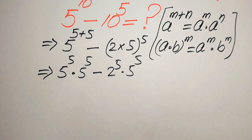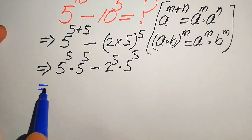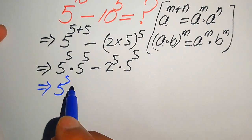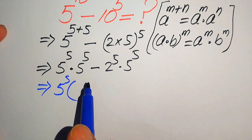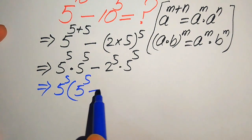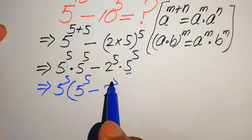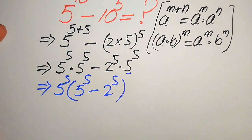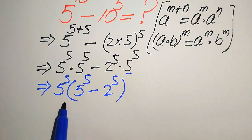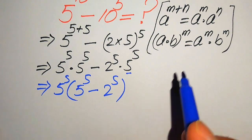Since both terms involve 5 to the power of 5, we take 5 to the power of 5 as a common factor. After taking out the common factor, the remaining values give us 5 to the power of 5 minus 2 to the power of 5 inside the bracket.